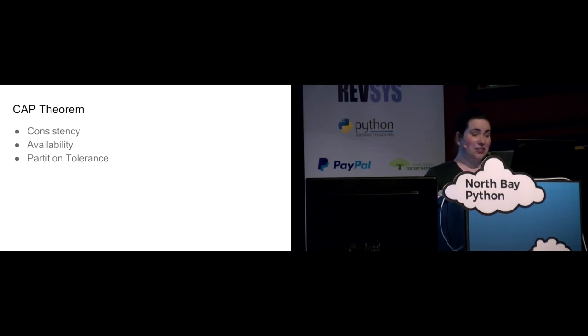So in consensus, there's also something called the cap theorem, which states that it's impossible for a consensus algorithm to provide more than two of these properties. Consistency, where every read receives the most recent value, write or an error. Availability, where every request receives a response, but there's no guarantee it's the most recent. And partition tolerance, where the network continues to operate despite delayed or lost or dropped messages on the network. So now let's take a look at what could possibly go wrong.